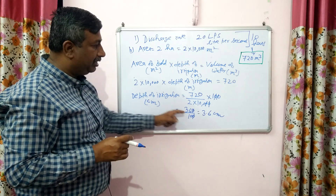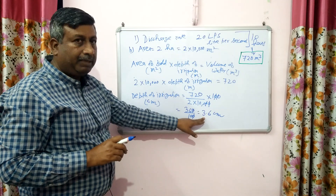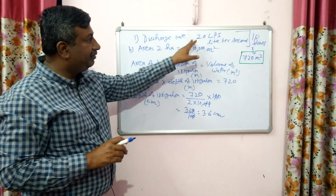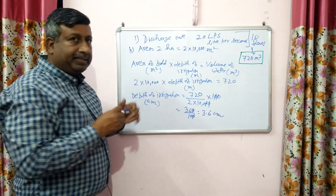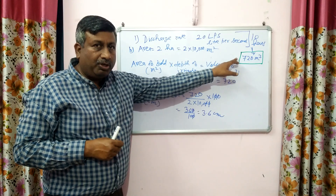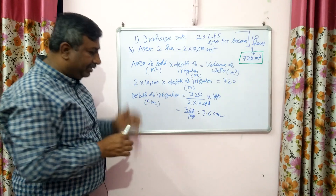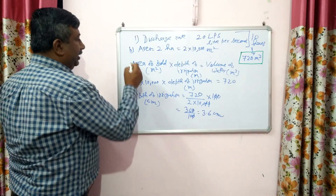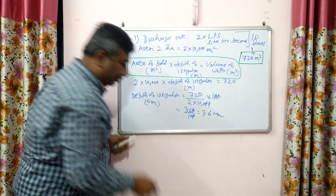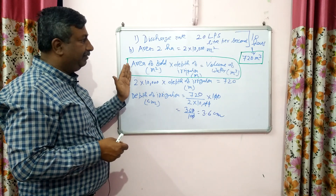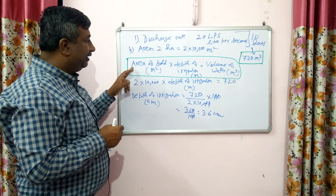So 720 divided by 20,000 gives 3.6 centimetres — not millimetres, it is 3.6 centimetres. This is the way how we can calculate. The basic step is: first calculate the volume of water in cubic metres using the discharge rate and the time, then apply the formula: area of field × depth of irrigation = volume of water.